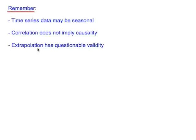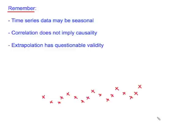Just a few notes to conclude this lesson. Firstly, time series data may be seasonal. For example, let's say we took a reading in January of each year, and we had a trend that looked a bit like this. Using these points, it looks like strong linear correlation. However, it may be that in the interim months the data looked something quite different. We just need to be cautious about assuming a linear model and take into account any factors that may cause the data to be seasonal.